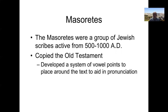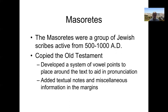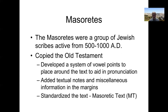The Hebrew language consists initially of a group of letters which are all consonants, and so the Hebrew scriptures were written first in all consonants. If you have consonants only, you can lose the sound of it a little bit. And so they developed points to place around the text to help with the pronunciation. They also added many textual notes and miscellaneous information — it's a big topic. And essentially, they standardized the text. The outcome of all their work is really what is called a Masoretic text.